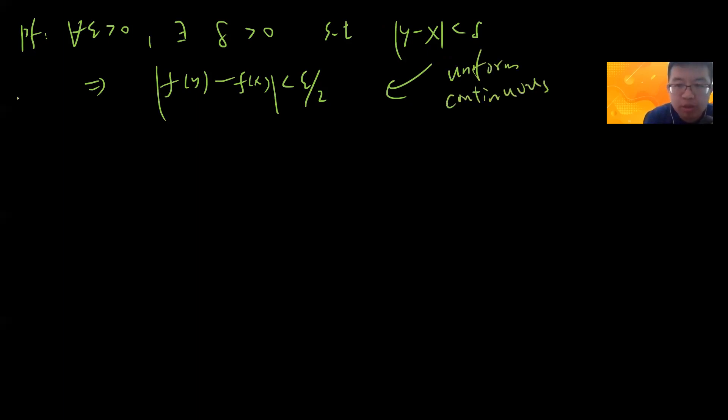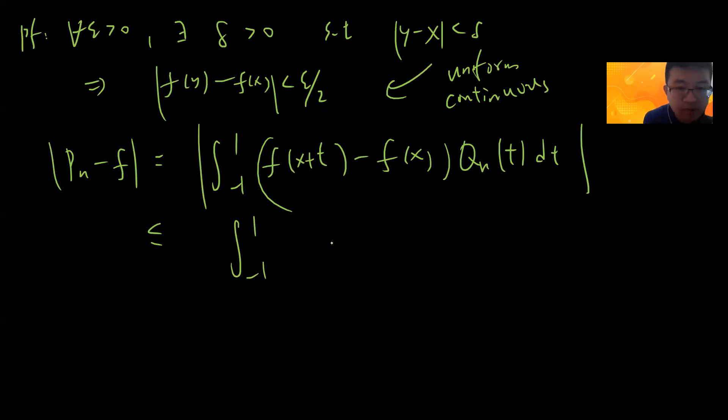For epsilon greater than 0, you can find delta greater than 0 such that when |y - x| less than delta, your |f(y) - f(x)| is less than epsilon/2. This is by uniform continuity, because continuous function on compact set is uniformly continuous. So now |P_n - f| is basically the integral from -1 to 1 of |f(x+t) - f(x)|Q_n(t)dt, because Q_n integral is 1 by my construction.